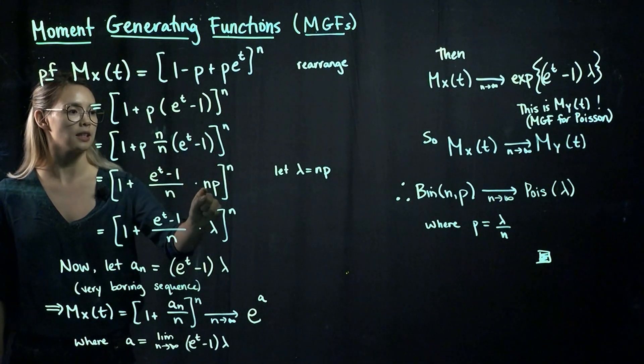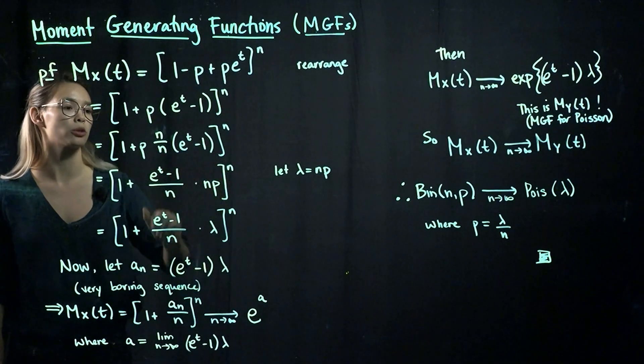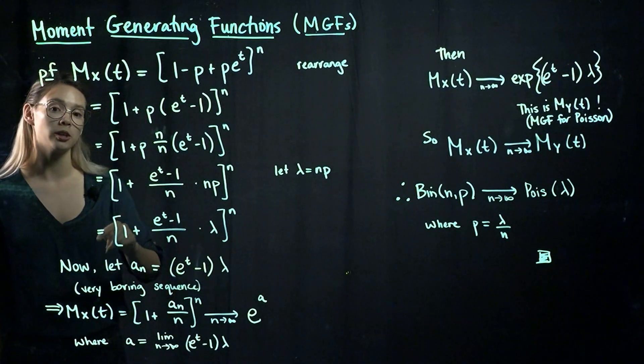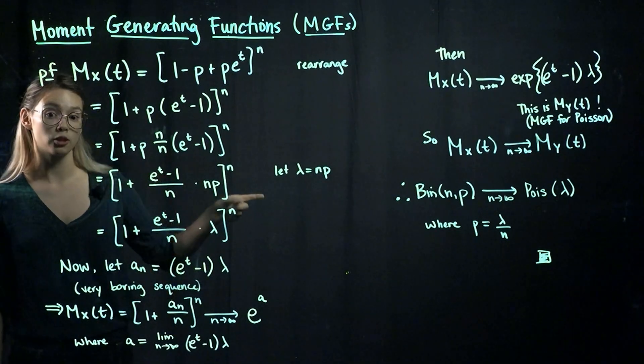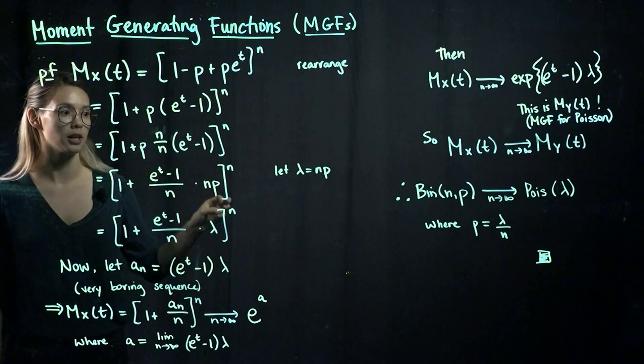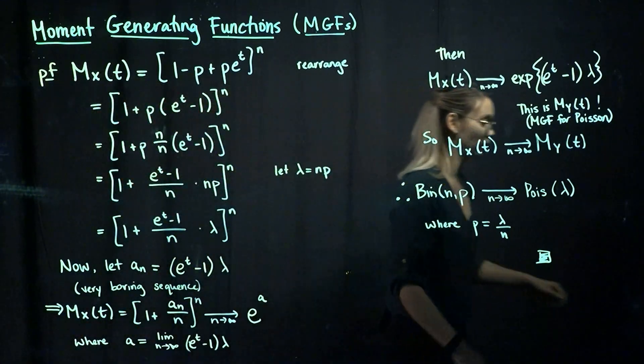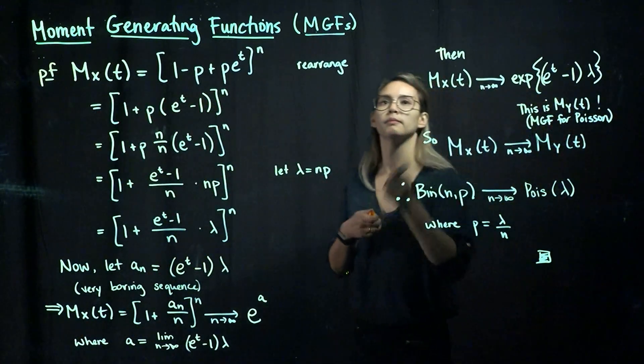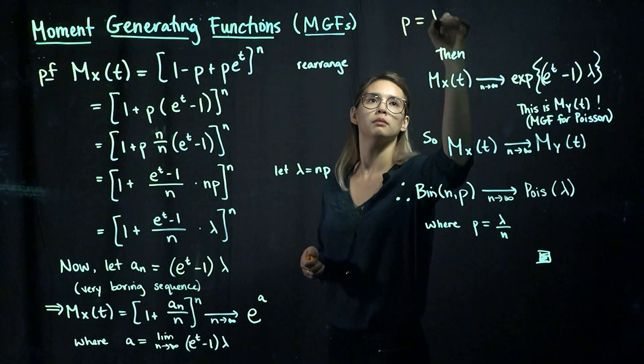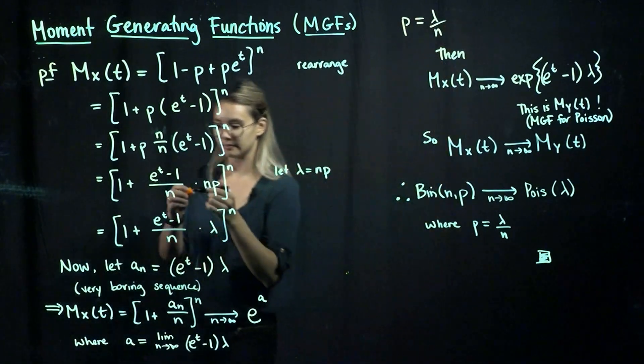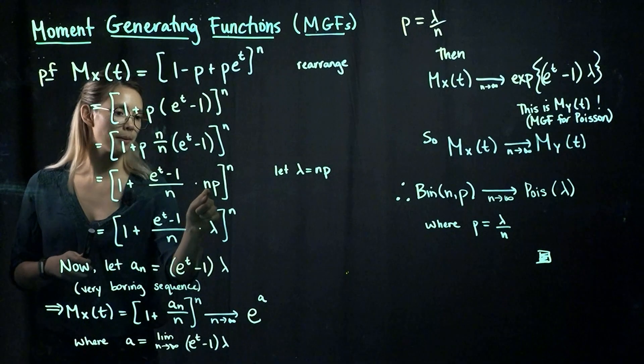And now we're going to let lambda equal np because we're trying to show that binomial with parameters np will converge to a Poisson with parameter lambda as long as p is equal to lambda over n. So that means we can swap out np for lambda.